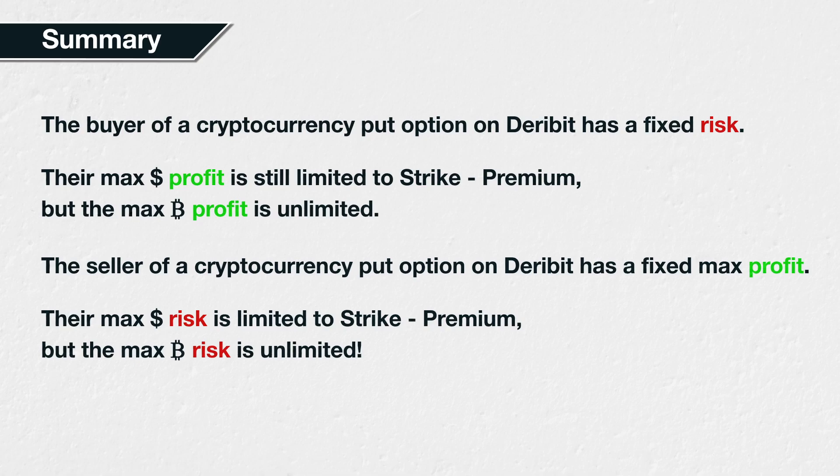While the put option calculations in dollar terms are the same as section 5, when measured in Bitcoin, they are quite different. This difference is particularly important to familiarise yourself with if you are used to using dollars as collateral for options on things like stocks or commodities, and are making the move over to cryptocurrency options on Deribit for the first time.